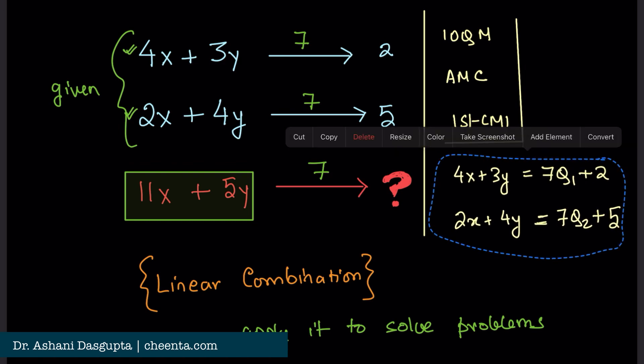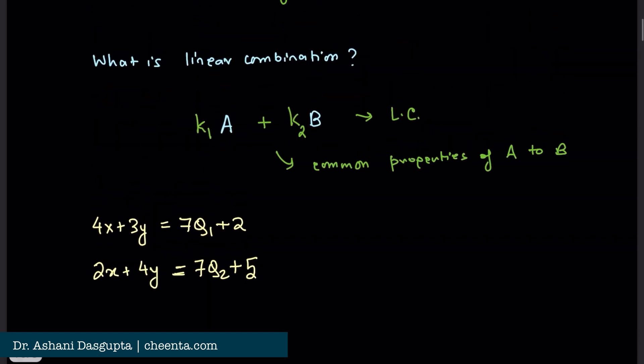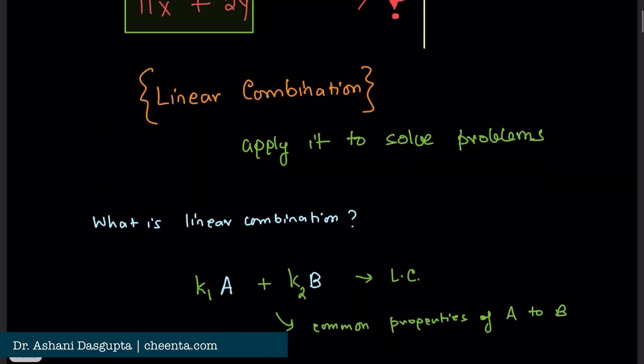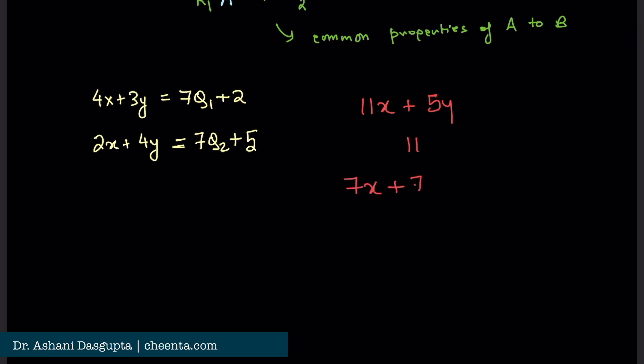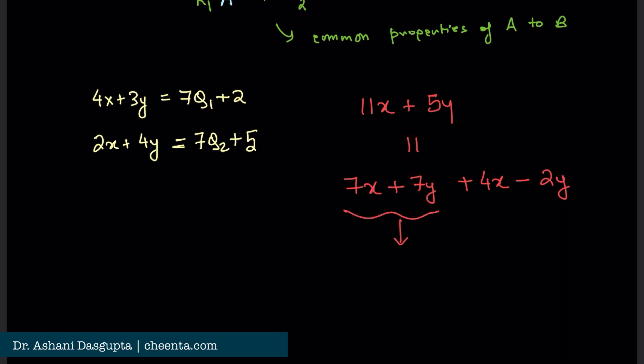Let me copy this and put it here. And let's also put the other expression here. 11x plus 5y. We can actually first reduce this. This is 7x plus 7y plus 4x minus 2y. Remember, we want to find out what is the remainder when I divide this by 7. I have isolated as much 7 as possible because 7x plus 7y will produce remainder 0 when divided by 7. So, this part has been a reduction. Now, let's look at 4x minus 2y.